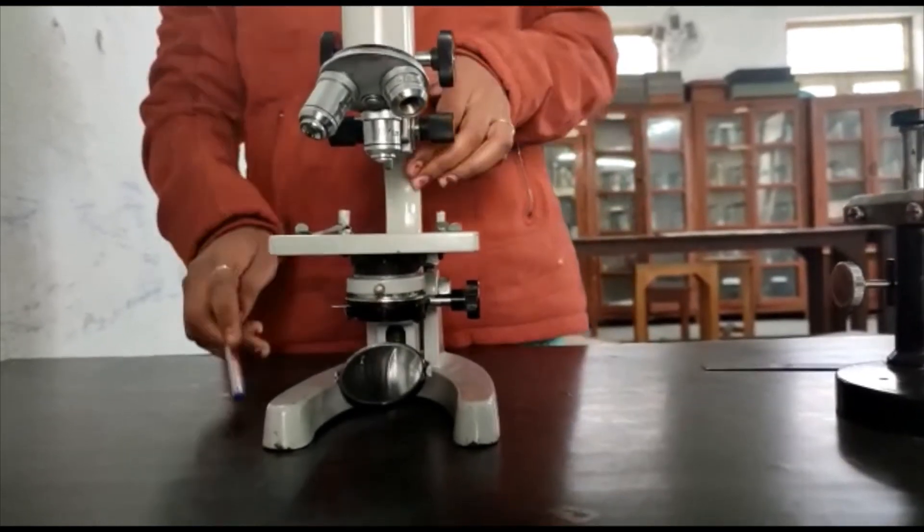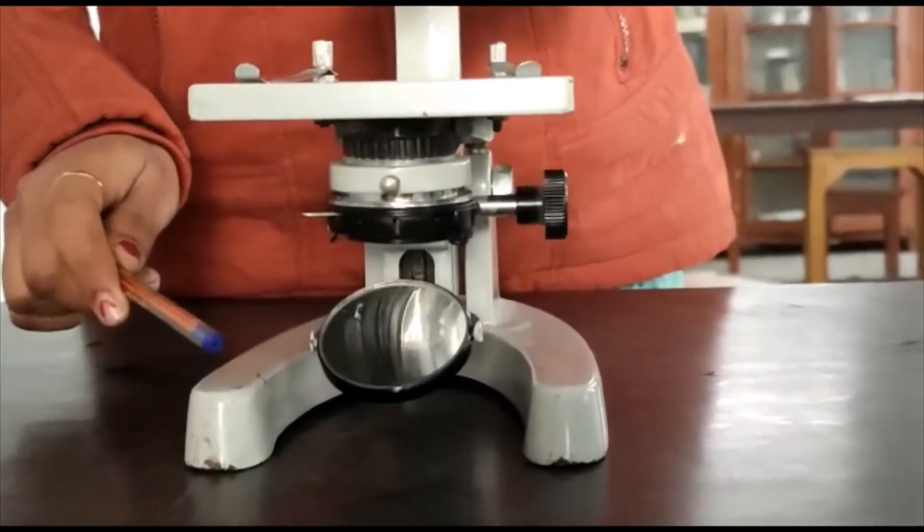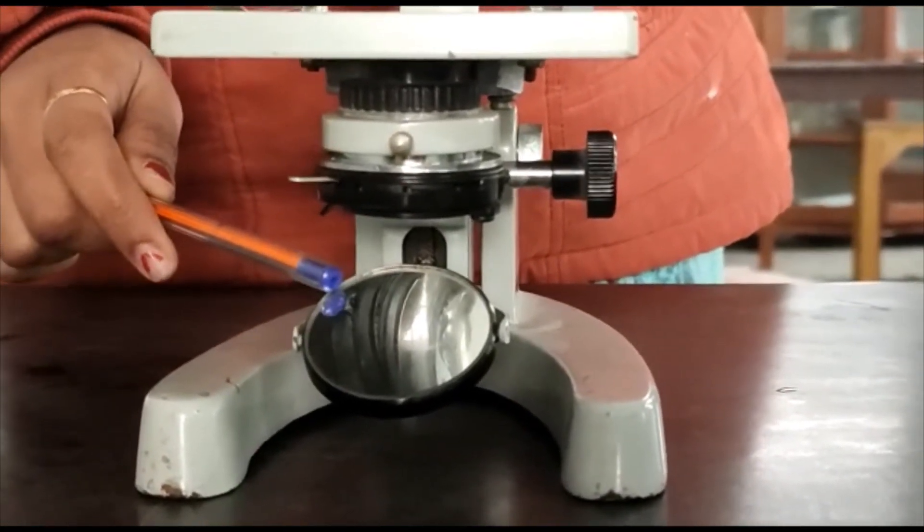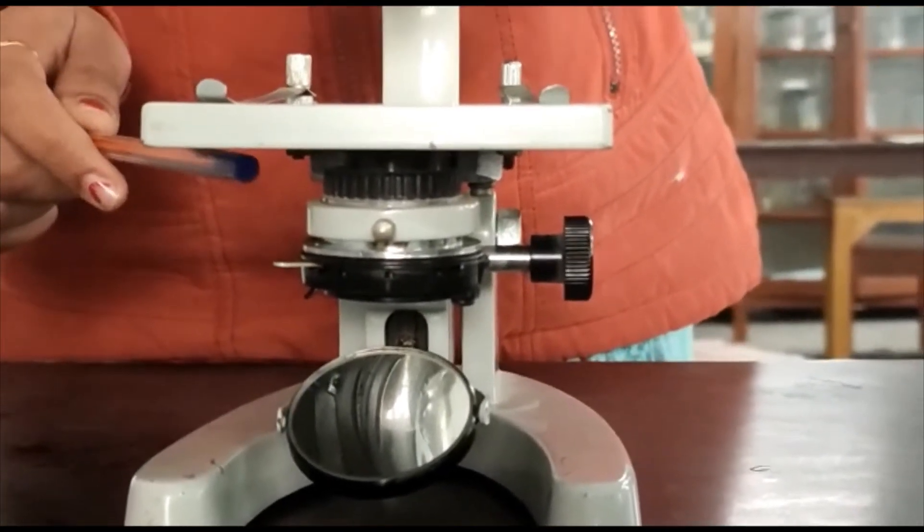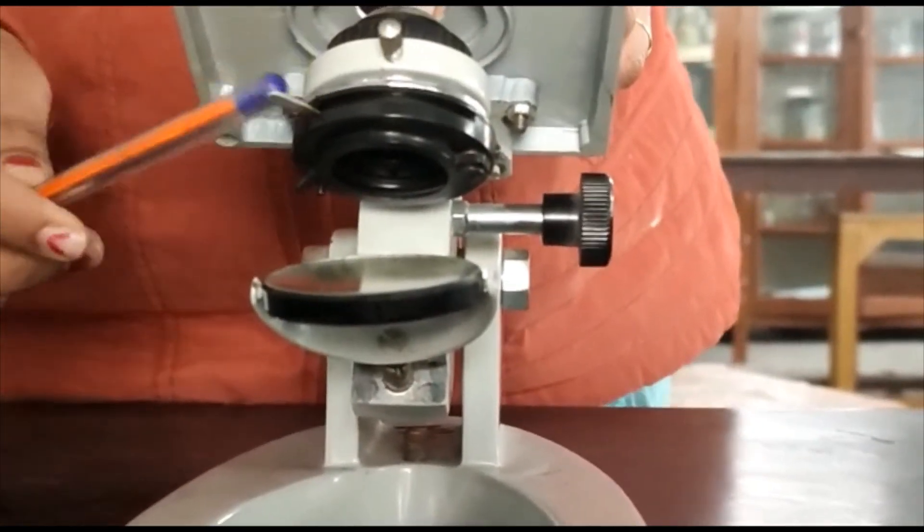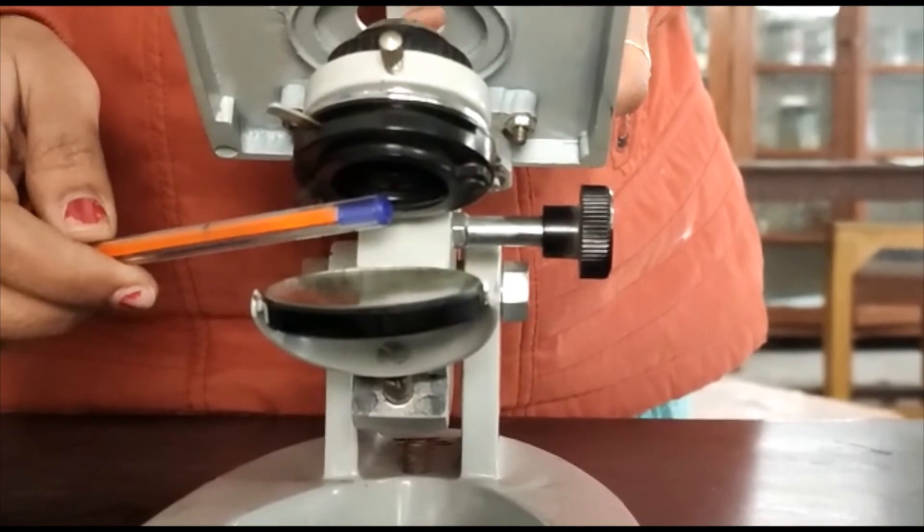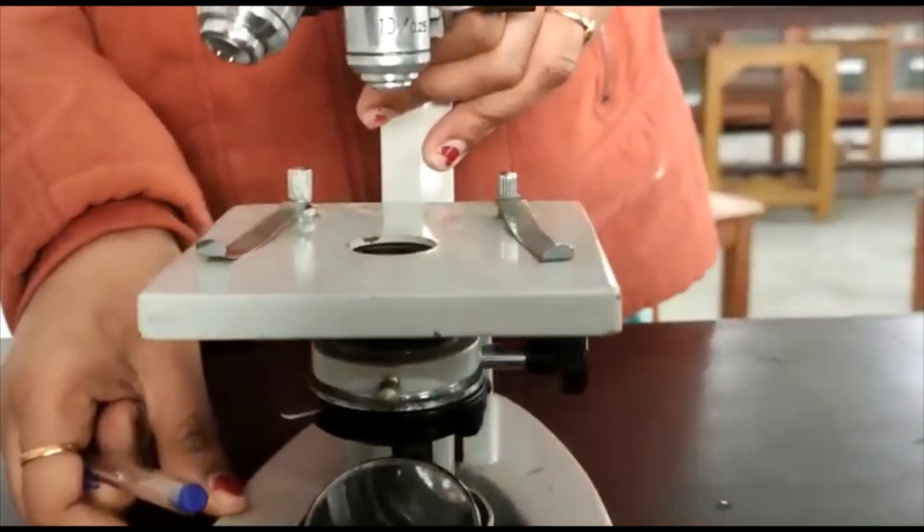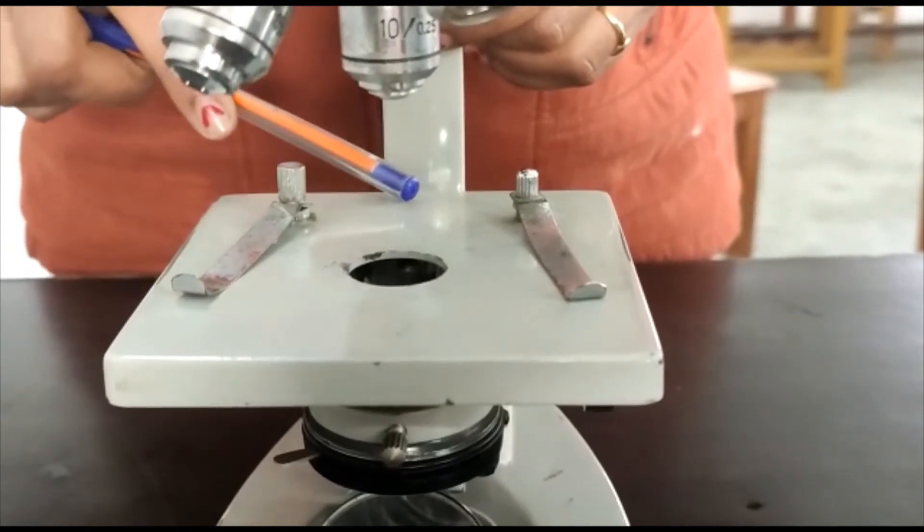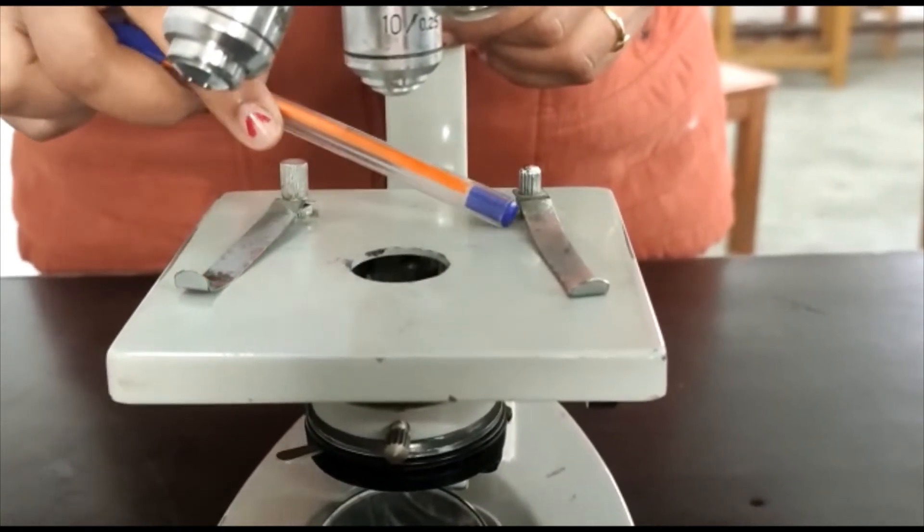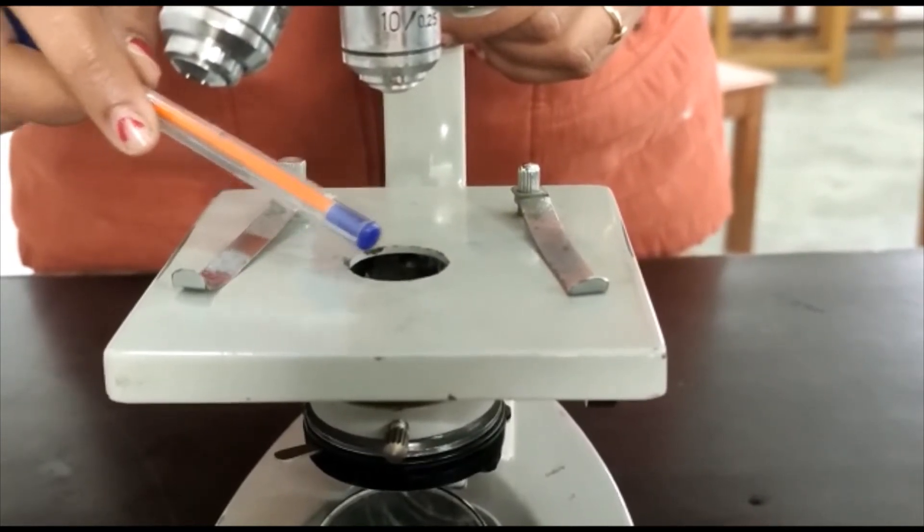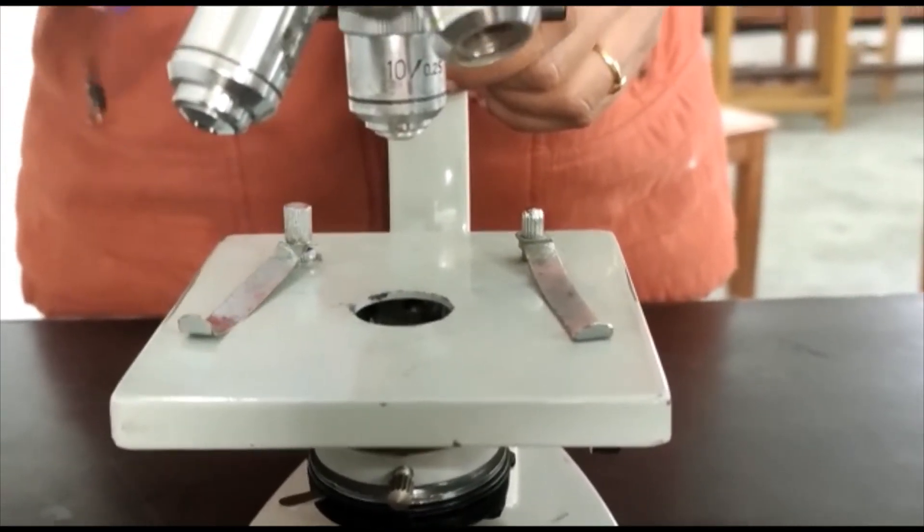The basal part is the foot with support, it is used for support. Next is mirror, used for reflection of light. Next is the iris diaphragm. Next is condenser lens which focuses the light. This is the stage and stage clips which is used for holding the slide, and here it is a hole in the slide.